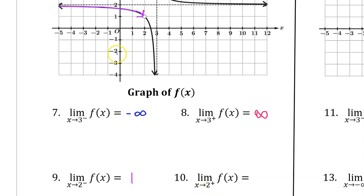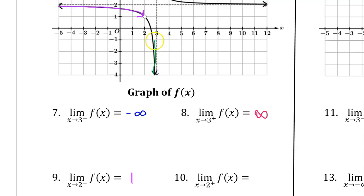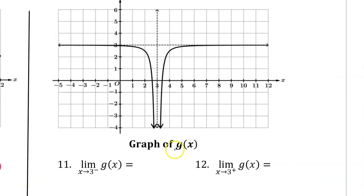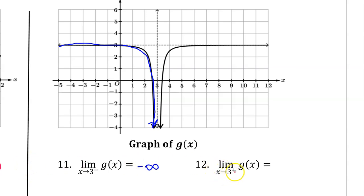Now let's do the limit as x approaches 2 from the right. That's going to be the exact same thing. As x approaches 2 from the right, we are still approaching the y value where the hole is, so that's going to be 1 as well. G of x has a vertical asymptote at x equals 3, so both limits will be some kind of infinity. As x approaches 3 from the left, g of x is approaching negative infinity. As x approaches 3 from the right, g of x again approaches negative infinity.